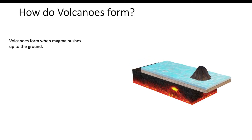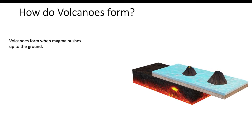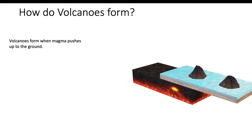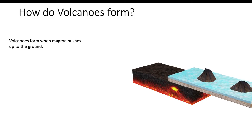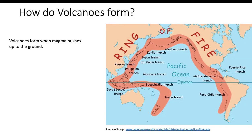Those are the three different ways a volcano can form. Now let's talk about some of the deadliest volcanoes. This is the Ring of Fire, and this is where most of the deadliest volcanoes occur. They all form along the boundary of land and ocean — it's a common place for volcanoes and earthquakes alike, which is why it's called the Ring of Fire.